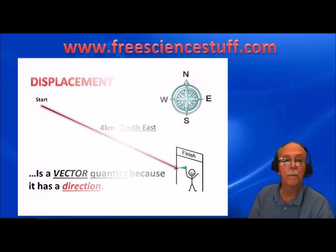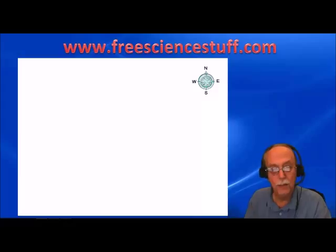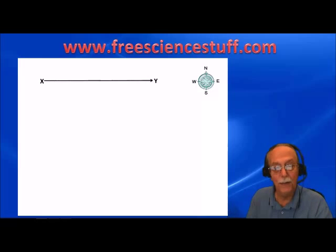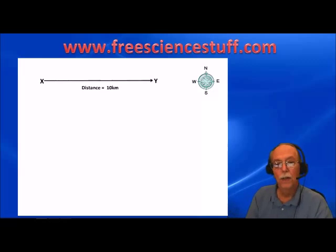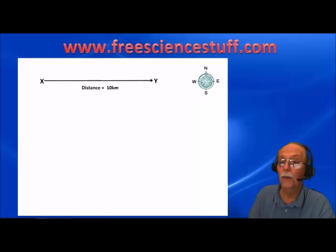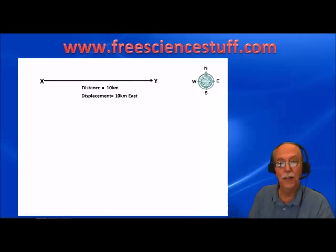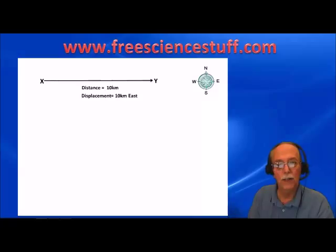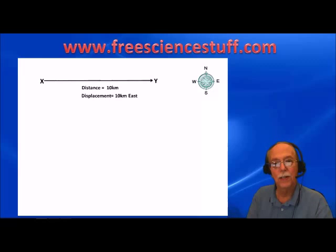Let's look at a couple of situations. Say we start at point X and travel in a straight line to point Y, and we know the distance is 10 kilometers. Notice that line has an arrowhead showing a direction — according to our compass, that direction is east. So we can describe the displacement as 10 kilometers east. The difference between distance and displacement is that displacement has a direction as well as a straight line distance.